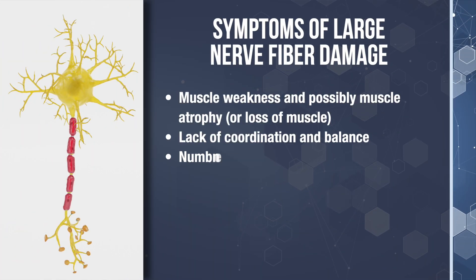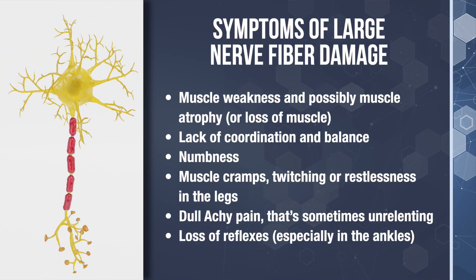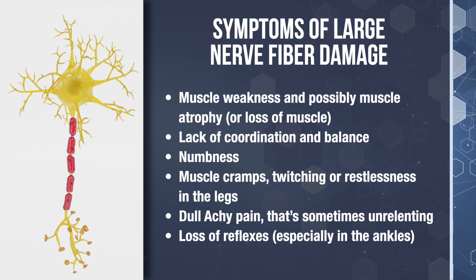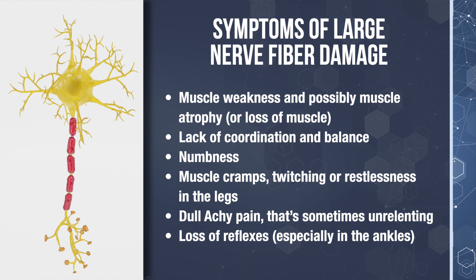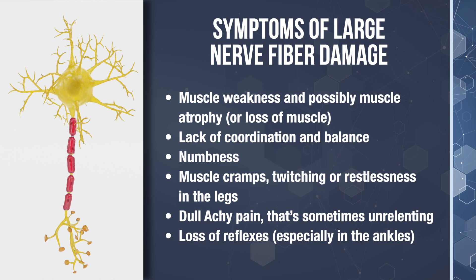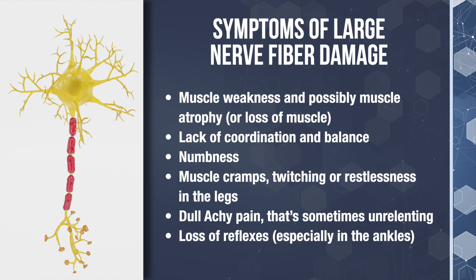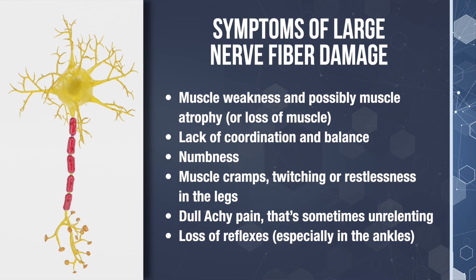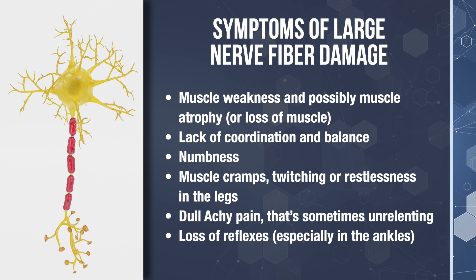So when the large nerve fibers get damaged, the symptoms people will experience very often can be muscle weakness and possibly muscle atrophy or loss of muscle. Lack of coordination and balance, numbness, muscle cramps, twitching or restlessness in the legs, dull achy pain that's sometimes unrelenting, and loss of reflexes, especially in the ankles.